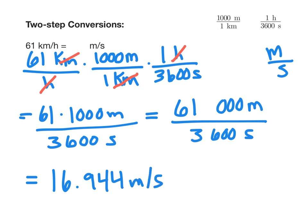Our last step is to look back at our original number and see how many significant digits there are in 61 kilometers per hour, which is two. So we need to rewrite our final answer with two significant figures. The number 16.944 can be rewritten with two significant figures as 17 meters per second. Put a nice box around it to make it easier to find when you're looking at your work.